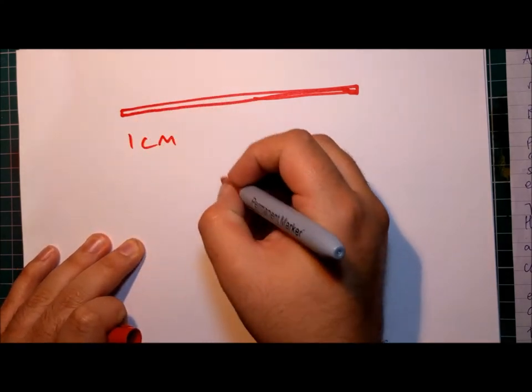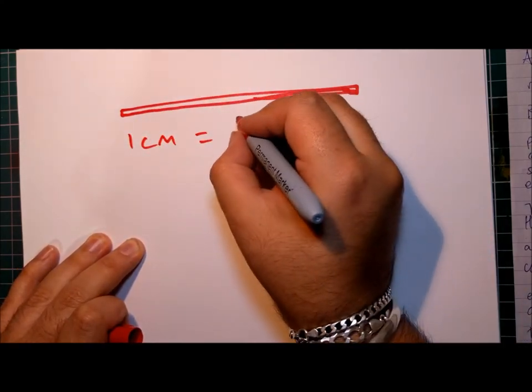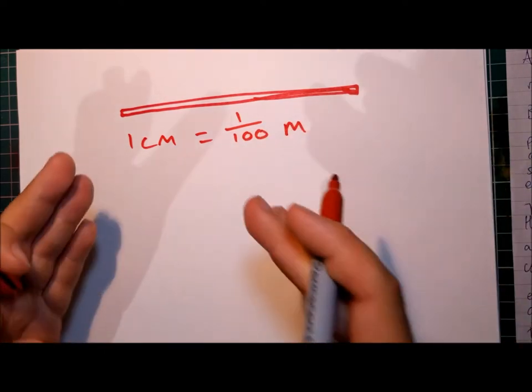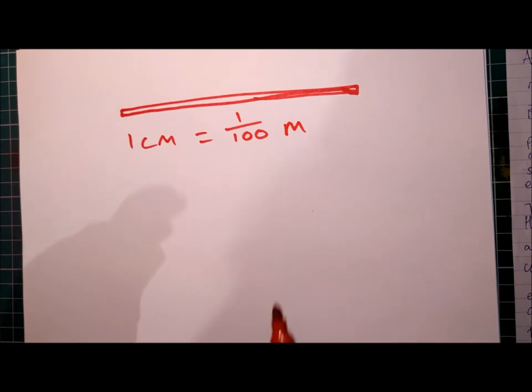One centimeter is the same as one hundredth of a meter. That's what the centi part means. There's a hundred centimeters in one meter.